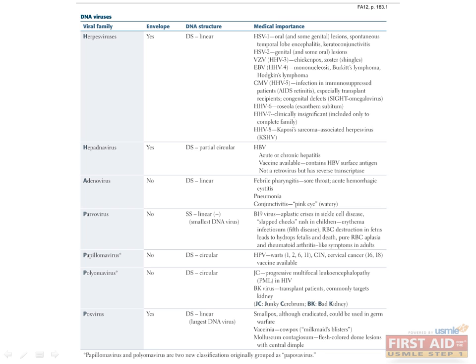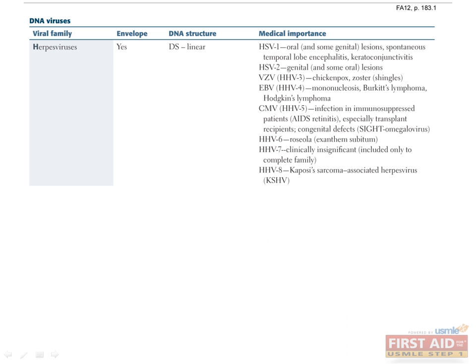The DNA viruses include herpesvirus, hepativirus, adenovirus, parvovirus, papillomavirus, polyomavirus, and poxvirus. Herpesvirus is a family of viruses that include HSV-1, HSV-2, VZV, EBV, CMV, HHV-6, HHV-7, and HHV-8.